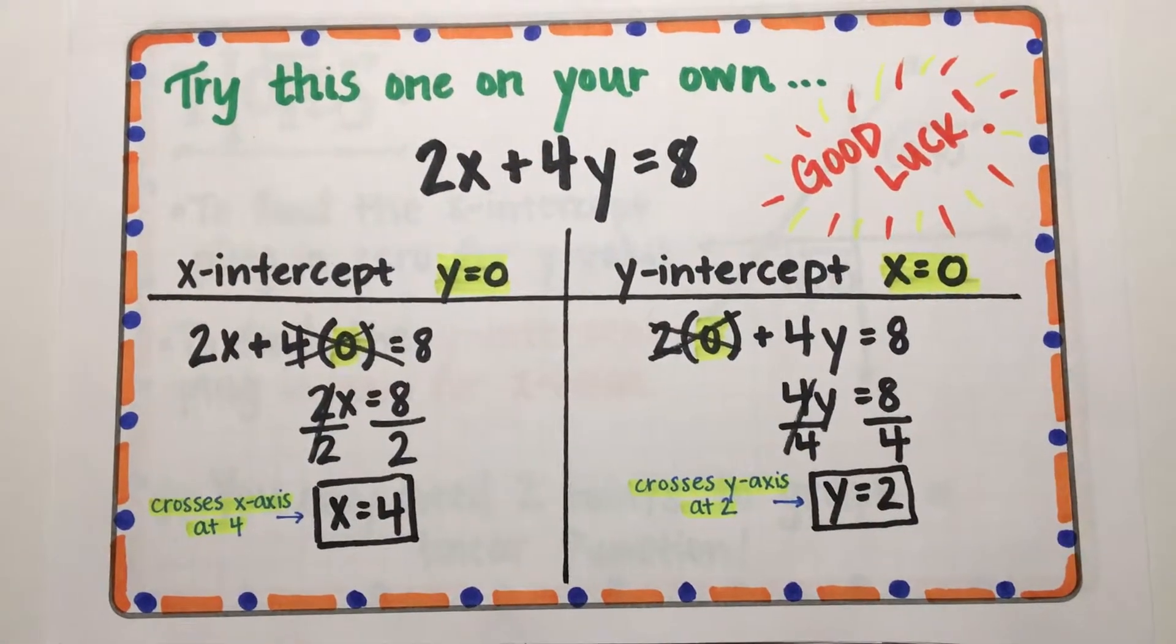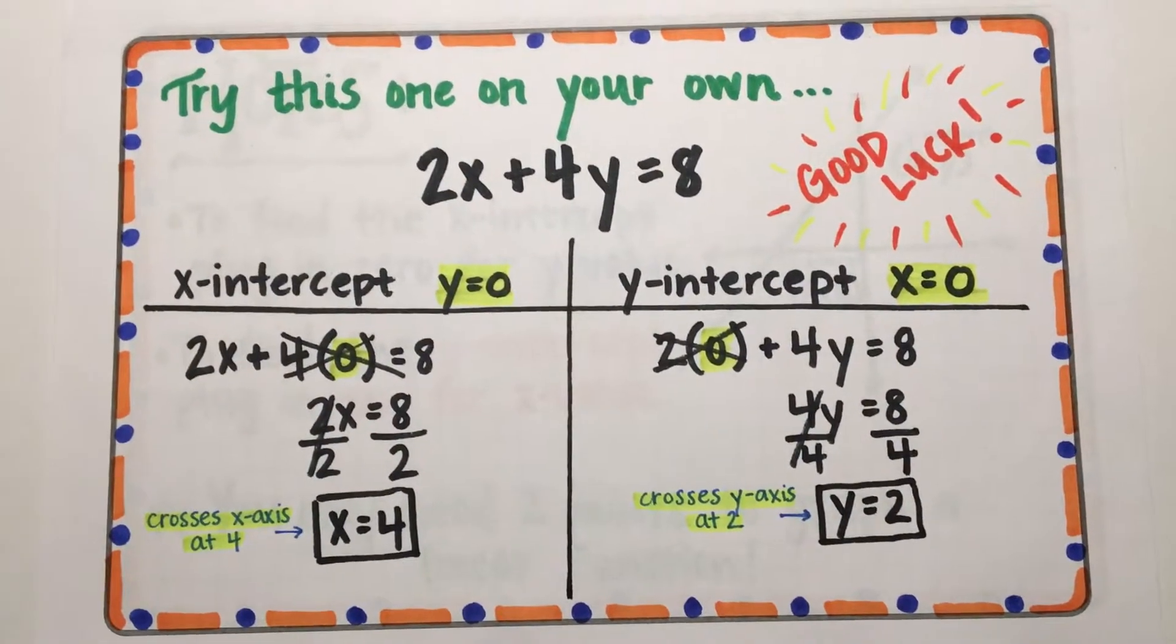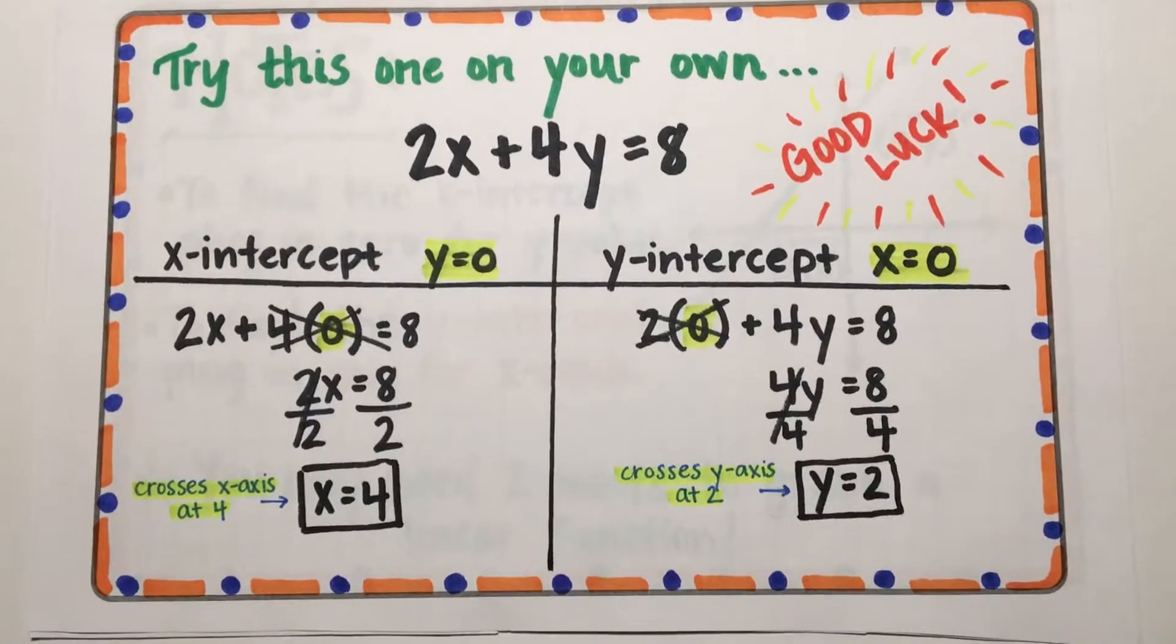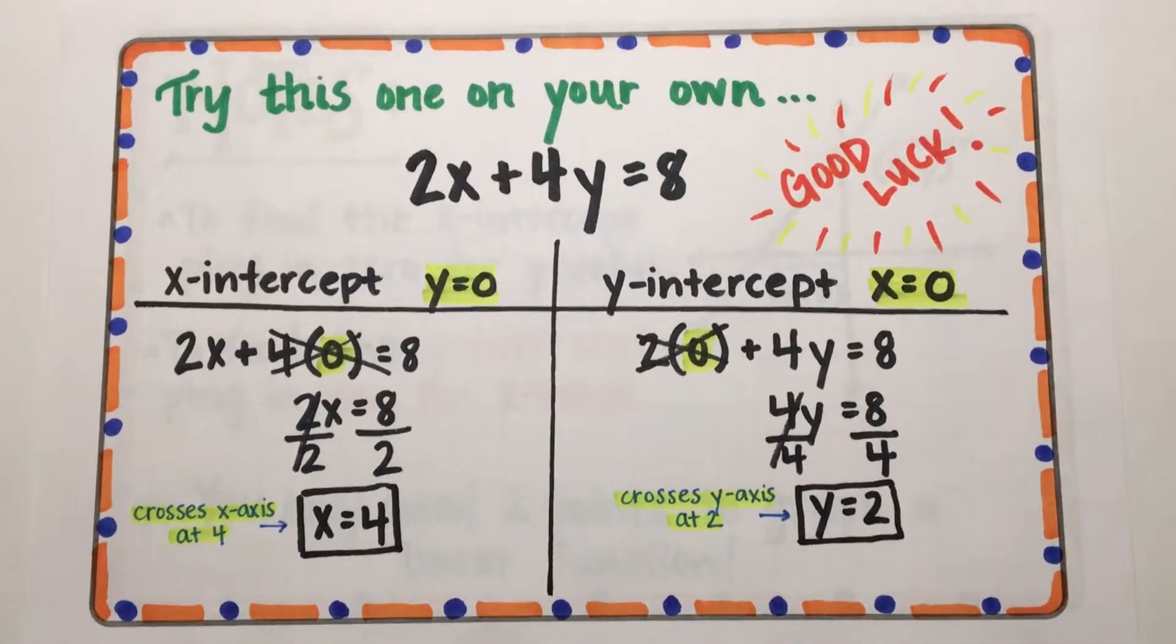Check your work and fix any mistakes you may have made. Your graph would cross the x-axis at 4 and the y-axis at 2. You should be feeling better at this point. Now you're ready to keep practicing on your own.